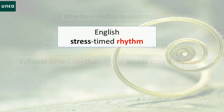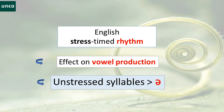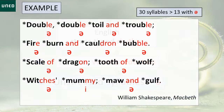This has an effect on vowel quality, since the vast majority of vowels in unstressed syllables in English are weak or reduced, such as the vowel on the screen. So, for example, in this paragraph from Macbeth, 13 out of 30 syllables contain a schwa.